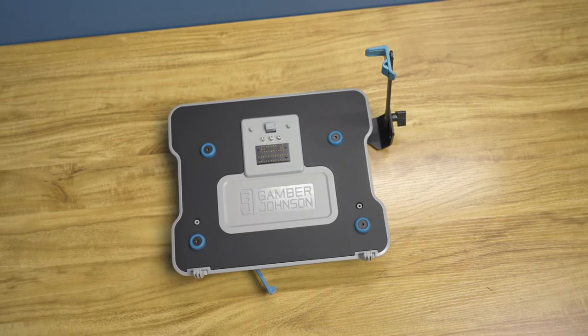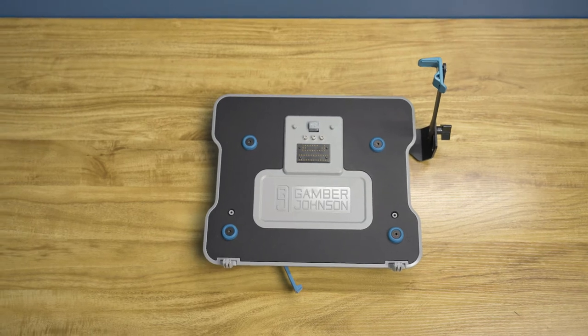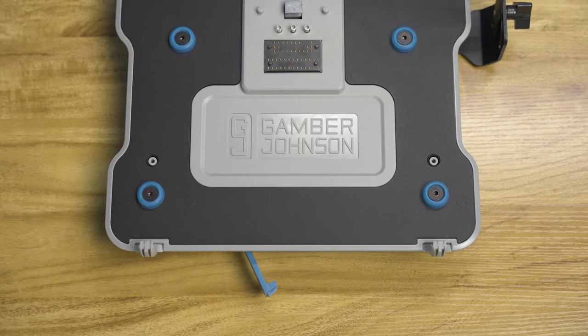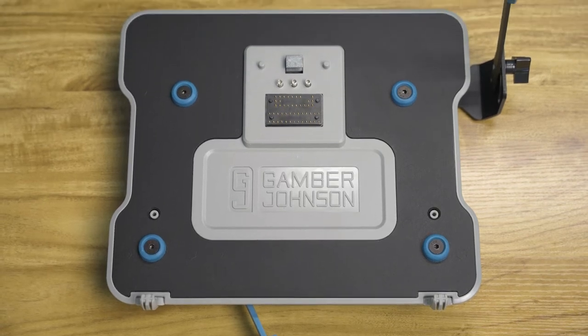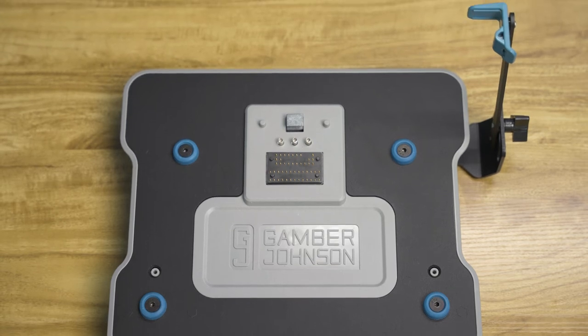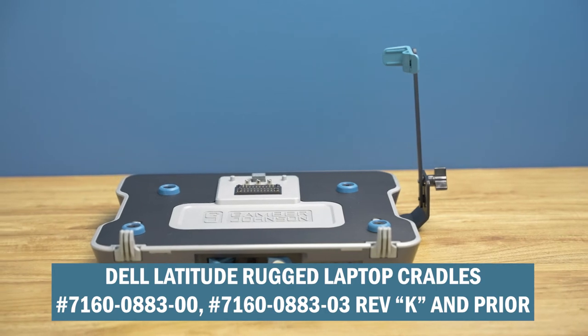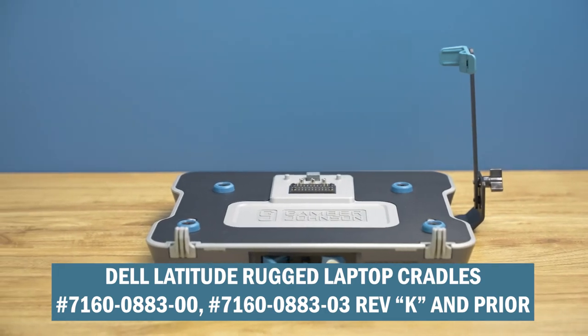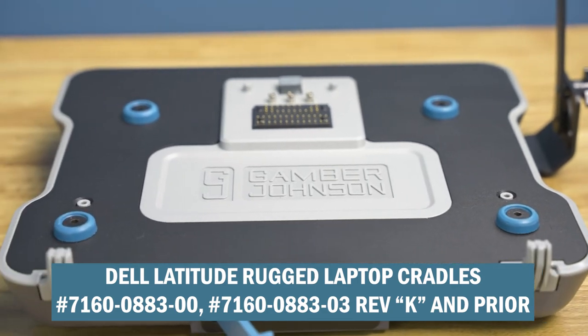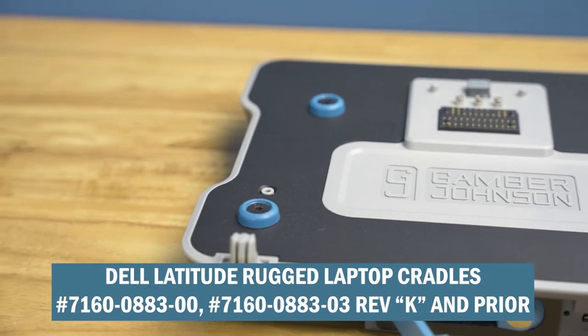This retrofit kit is designed to work with Dell Latitude Rugged Laptop docking stations item number 7160-0882-00, 7160-0882-03 revision N and prior, and Dell Latitude Rugged Laptop cradles item numbers 7160-0883-00 and 7160-0883-03 revision K and prior.